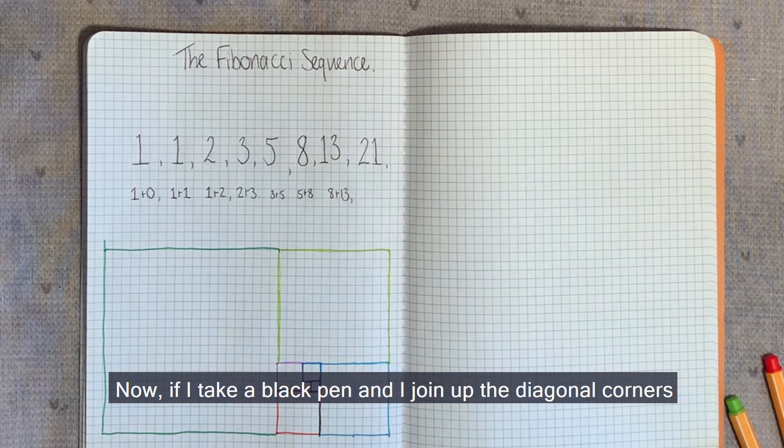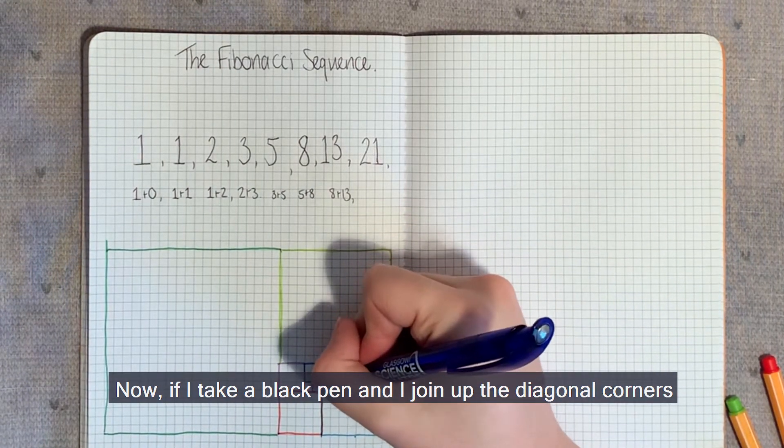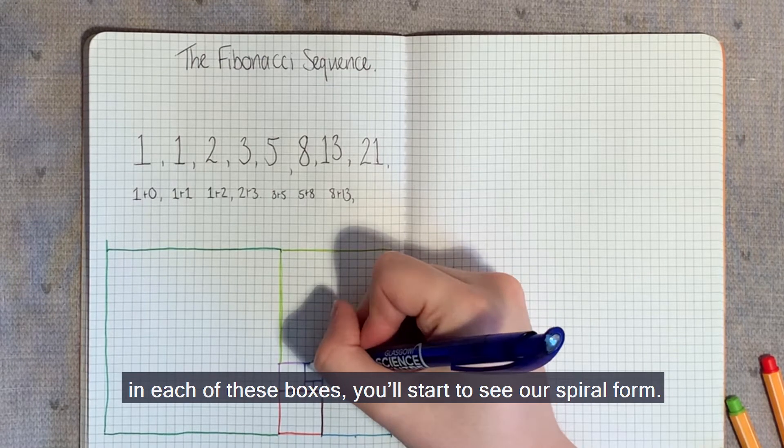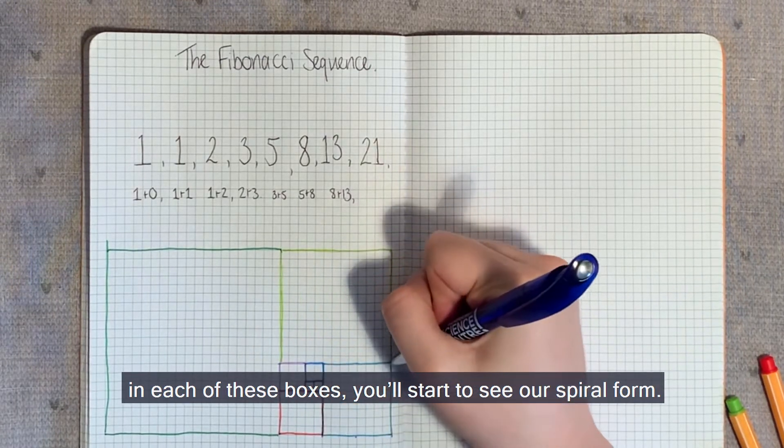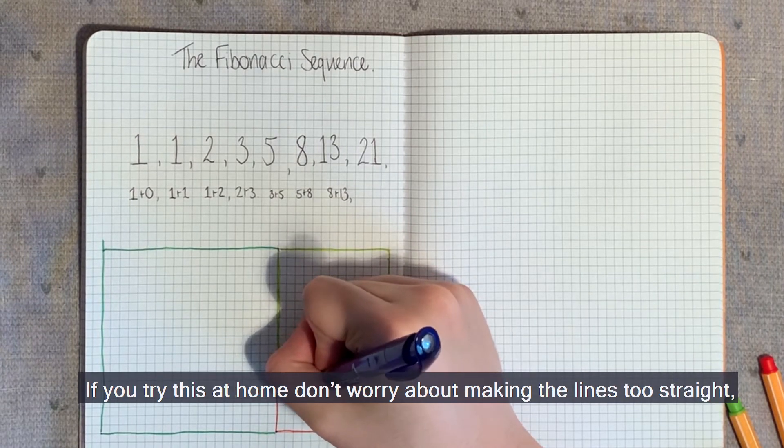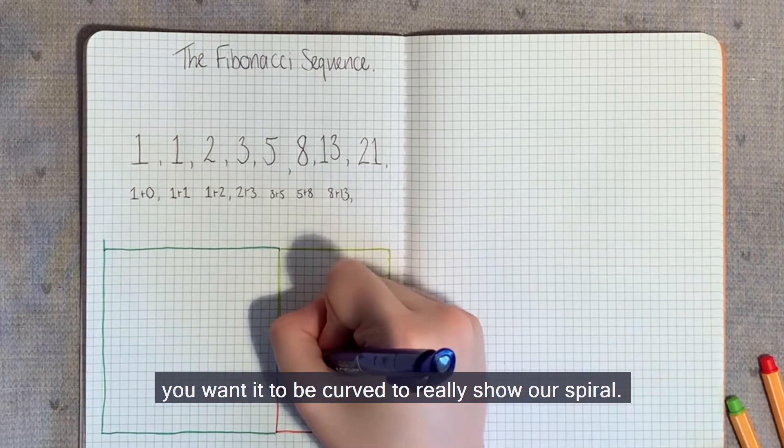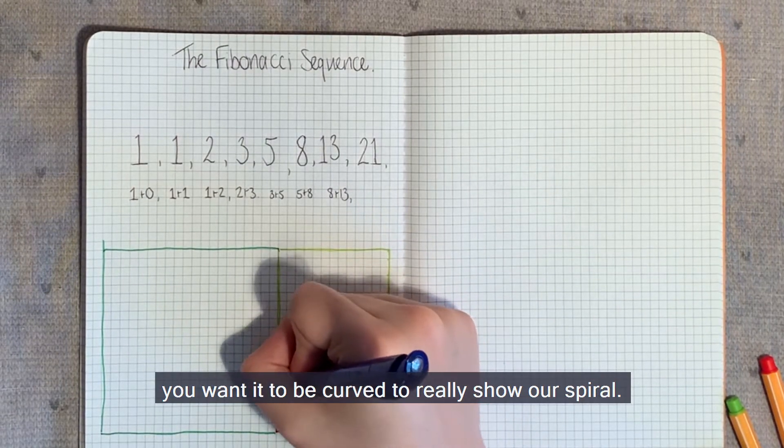Now, if I take a black pen and I join up the diagonal corners in each of these boxes, you'll start to see our spiral form. If you try this at home, don't worry about making the lines too straight. You want it to be curved to really show our spiral.